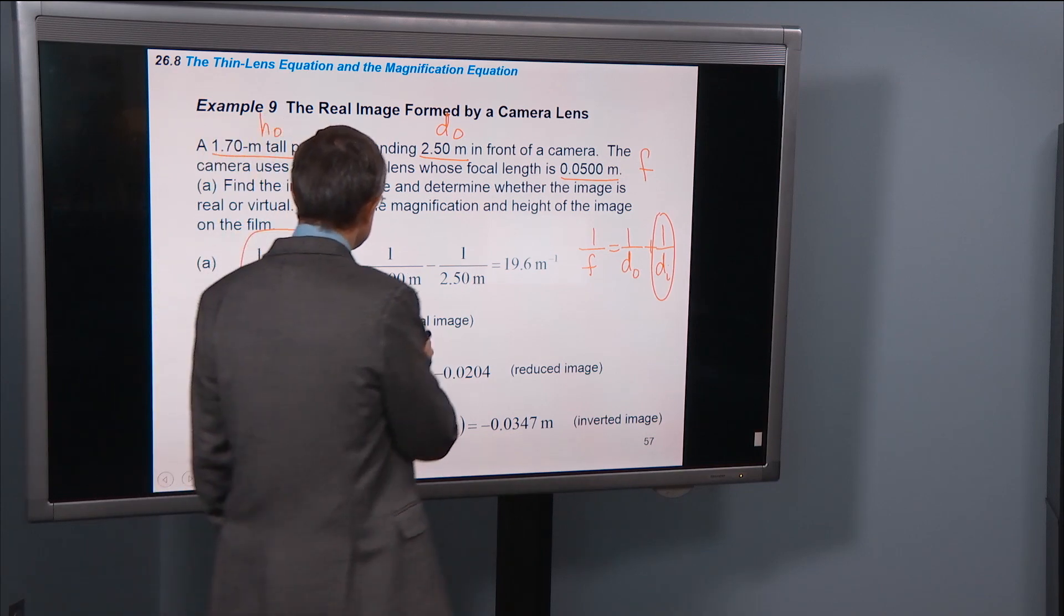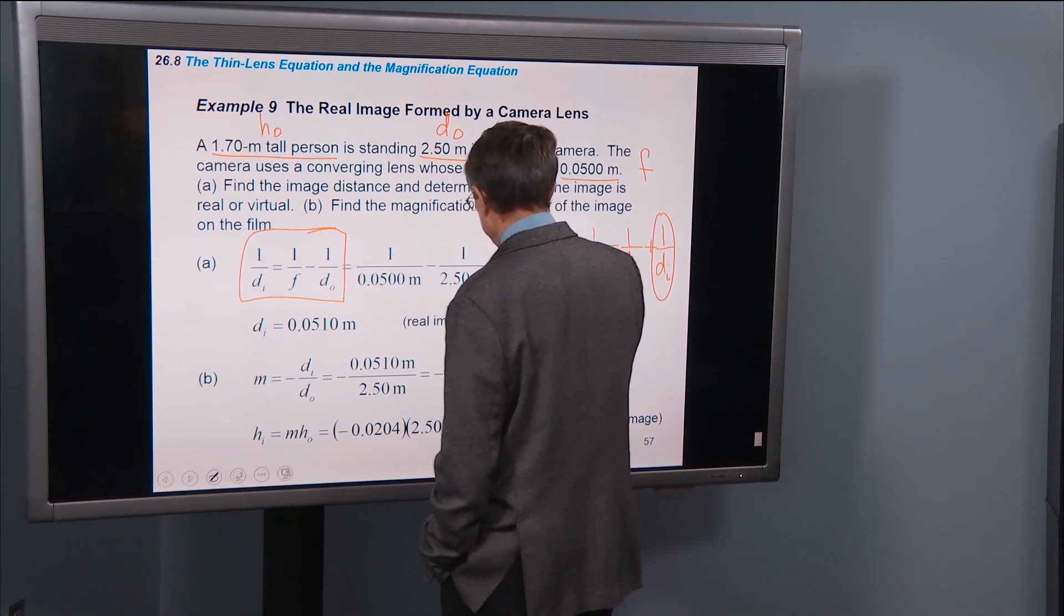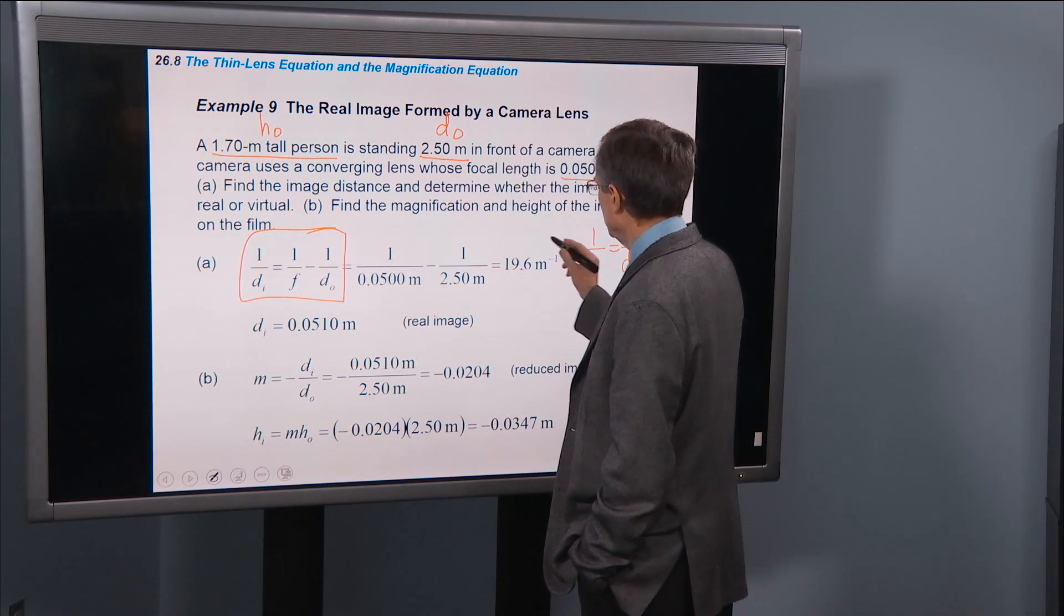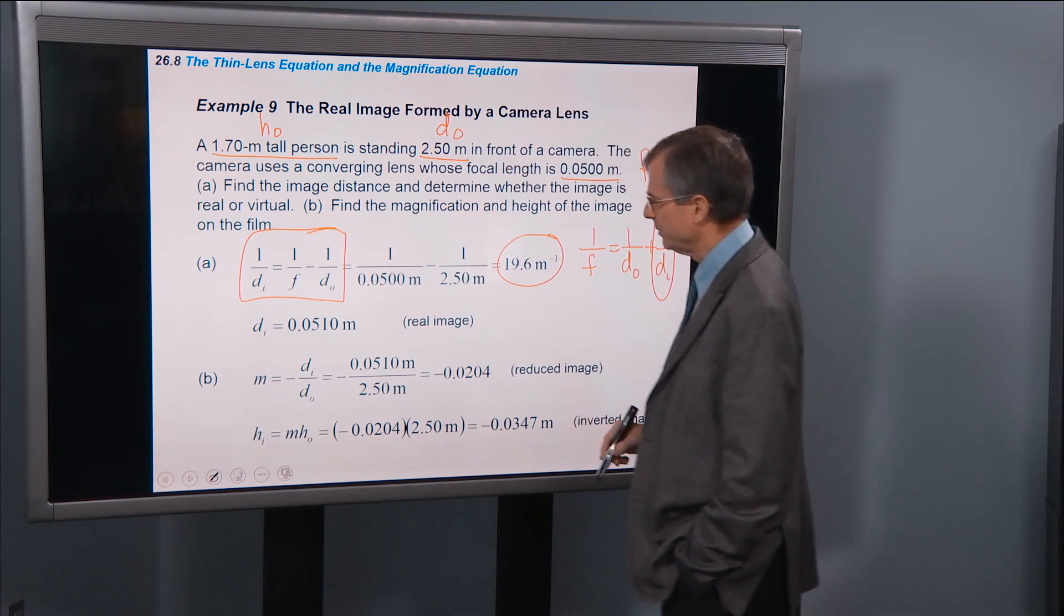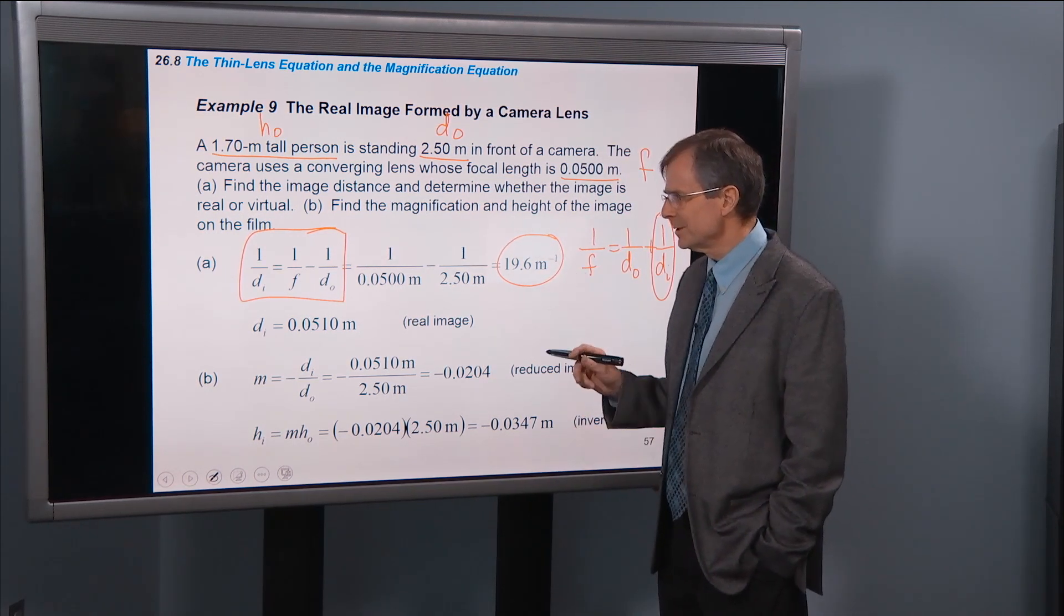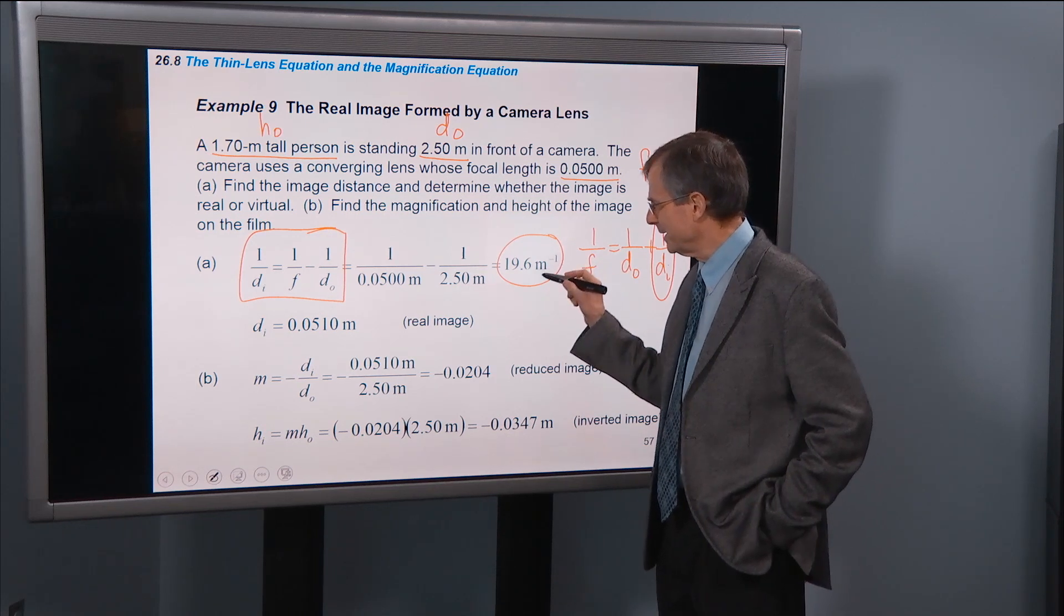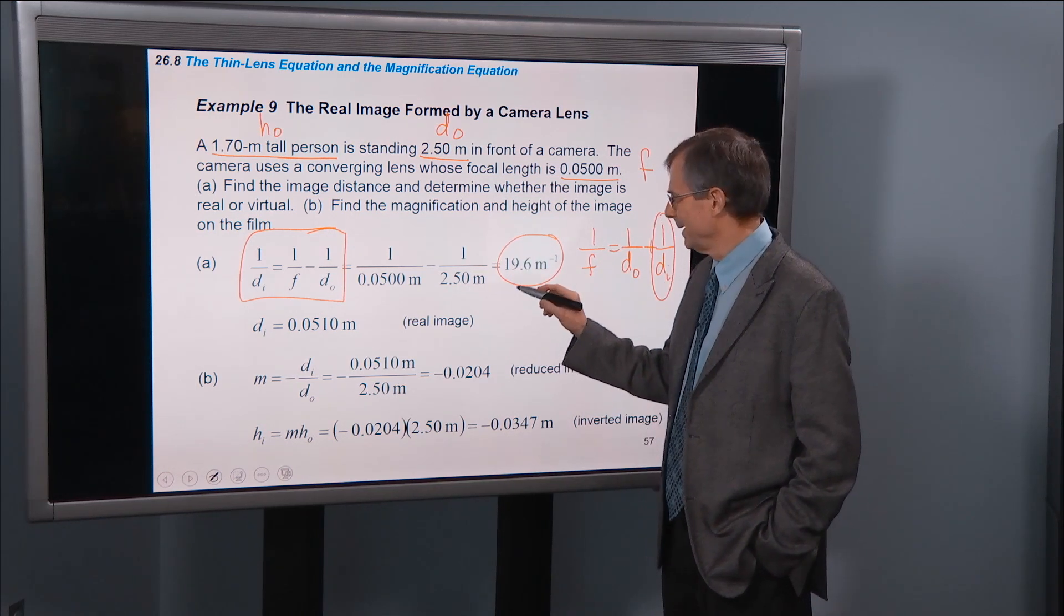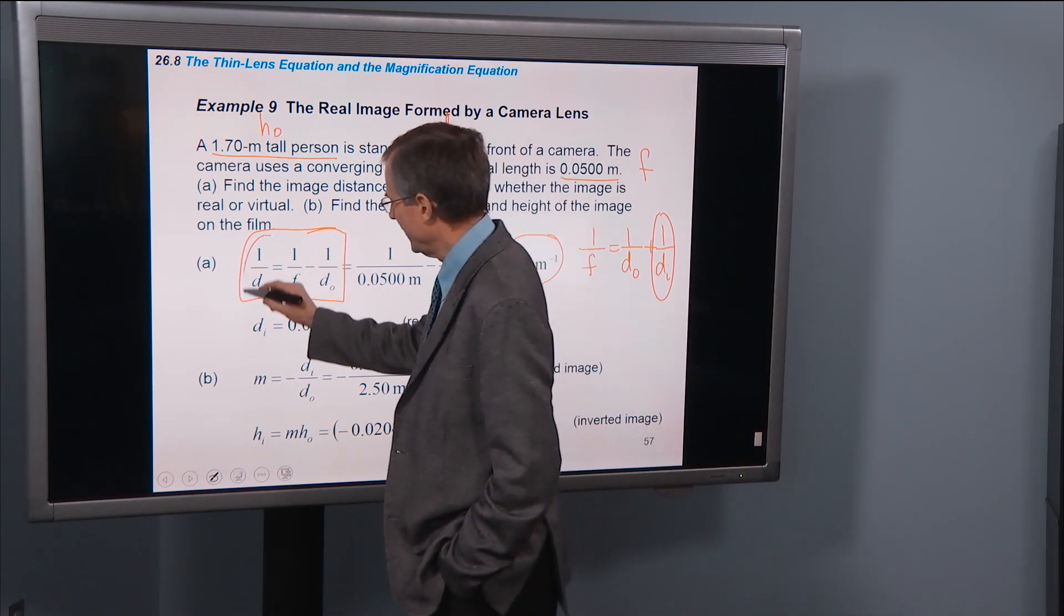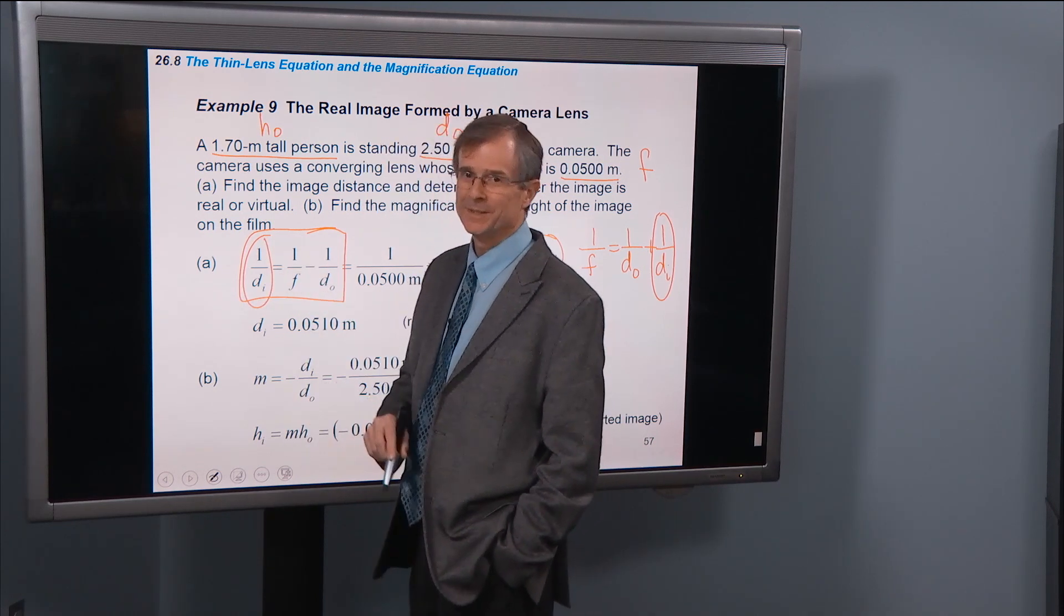Plugging in the numbers, the focal length we have, the object distance we have, we get 19.6 inverse meters. Keeping the units to remind ourselves that that's in 1 over meters and that that gives us 1 over the image distance.